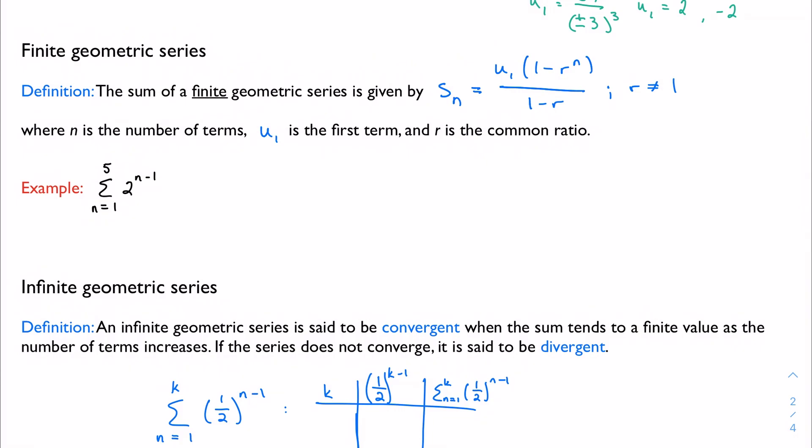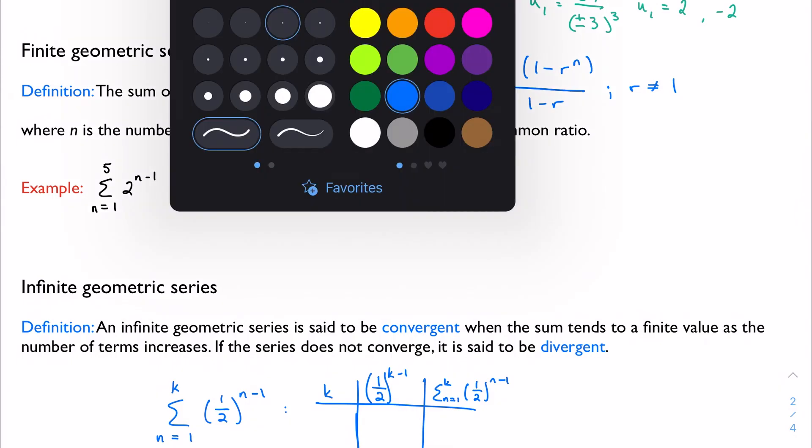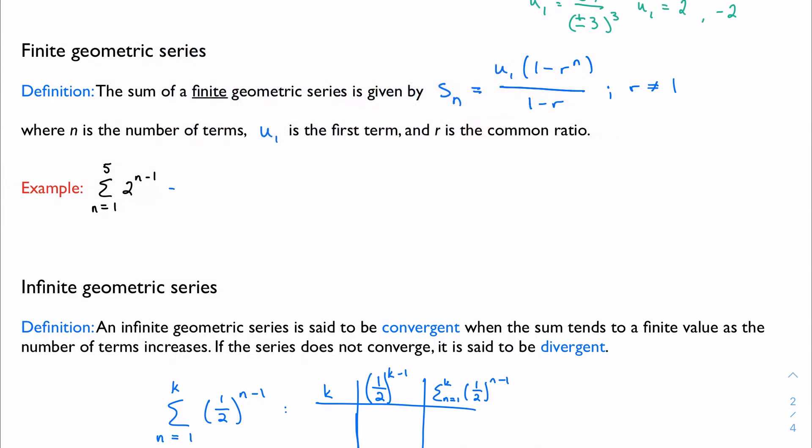For example, here's our finite geometric series. I'm just going to apply the formula here. u₁, well, let's figure that out first. u₁ is just going to be 2 to the 1 minus 1, which is 2 to the 0, so it's 1.